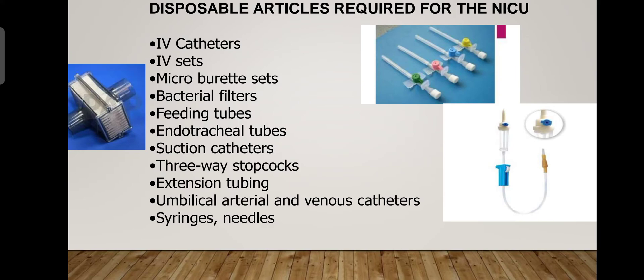Disposable articles required for the NICU include IV cannulas, IV tubings, IV catheters, IV sets, microburette sets, bacterial filters, feeding tubes, endotracheal tubes, suction catheters, three-way stopcocks, extension tubings, umbilical arterial or venous catheters, syringes, and needles.